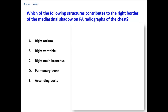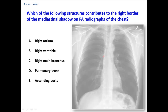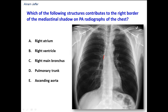Which of the following structures contributes to the right border of the mediastinal shadow on PA radiographs of the chest? Let's visualize the PA radiograph of the chest. Part of the mediastinal shadow here is formed by the superior vena cava, and then we have the right atrium on the right side. This small piece here is formed by the inferior vena cava. This is the right border of the mediastinal shadow.